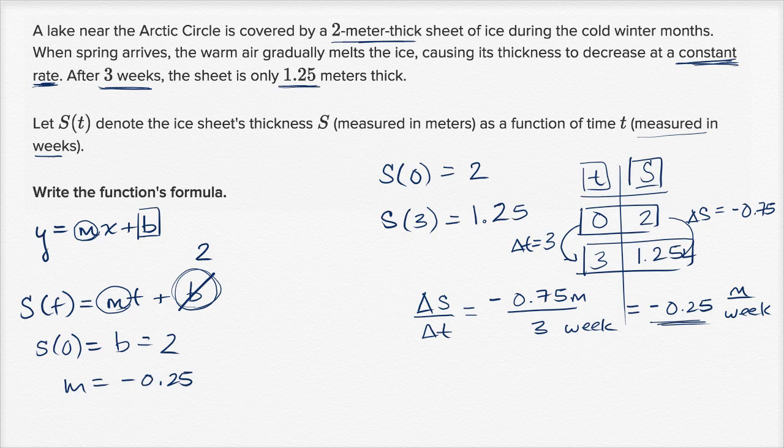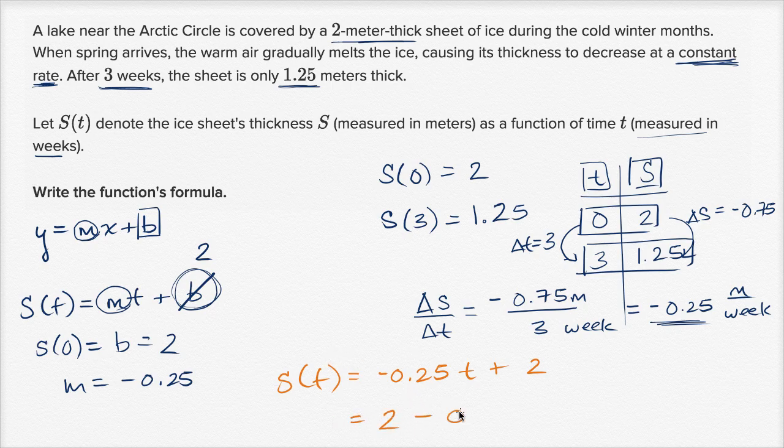So now we can write what the function is going to be. Maybe I'll do this in a new color just for fun. S(t), thickness as a function of time, is going to be equal to m, negative 0.25 times time plus 2. Or if you want, you could write it like this, 2 minus 0.25t.